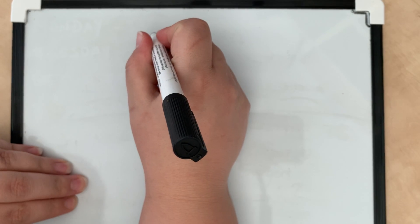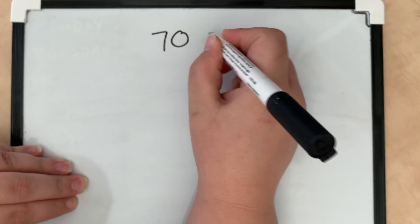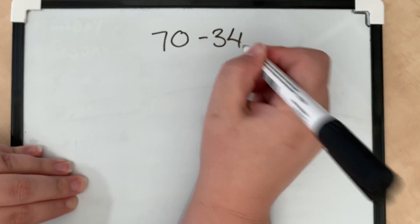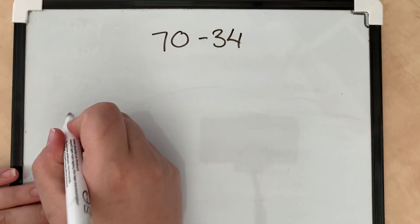Okay, so today we're going to be looking at subtracting two-digit numbers using a number line. The example we've got on the PowerPoint is 70 take away 34. So what we're going to do is draw a horizontal line across your page.